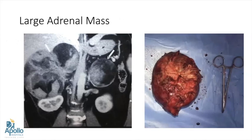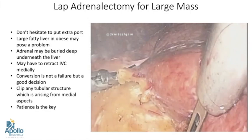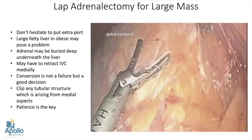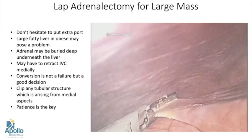My next index case is a large adrenal mass. This patient was having bilateral adrenal mass and underwent bilateral adrenalectomy, but here I will be discussing only the right hand side. It was around a 17 centimeter mass. In case of large masses, we should not hesitate to put an extra port. A large fatty liver — especially in obese patients, many of whom can be very obese, particularly with myelolipoma — can pose a problem because of difficult retraction, and the liver can be very heavy and may need one more extra retraction port. The liver needs to be mobilized aggressively.